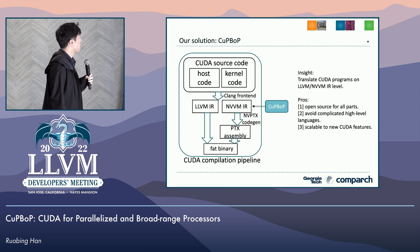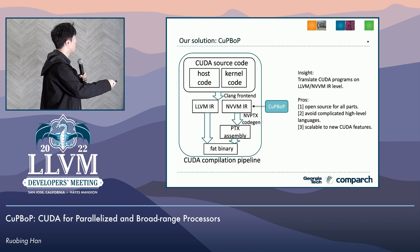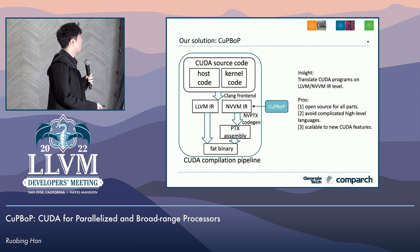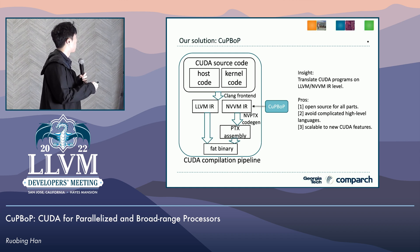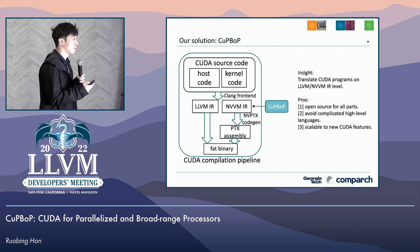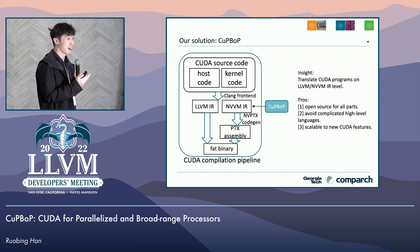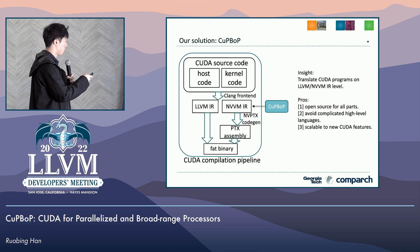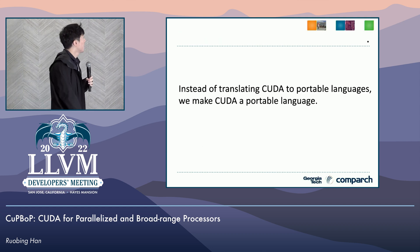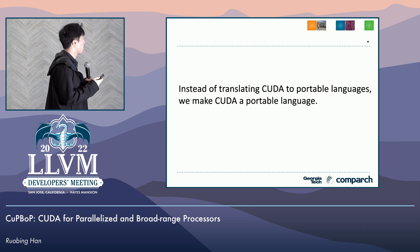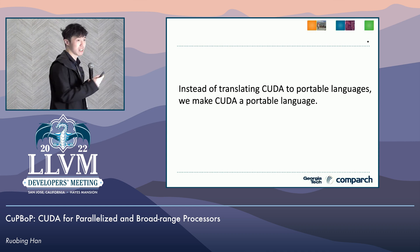Based on those observations, we propose our solution. Instead of using source code or PTX assembly, we perform translations at the LLVM and NVVM IR level. The whole toolchain is open source since we rely on the Clang front-end. Because LLVM IR is a low-level language, we don't need to handle complicated C++ edge cases. In our framework, we don't rely on any target language, third-party libraries, or third-party languages. So instead of translating CUDA to another portable language, we make CUDA itself a portable language — that is the core insight of our project.